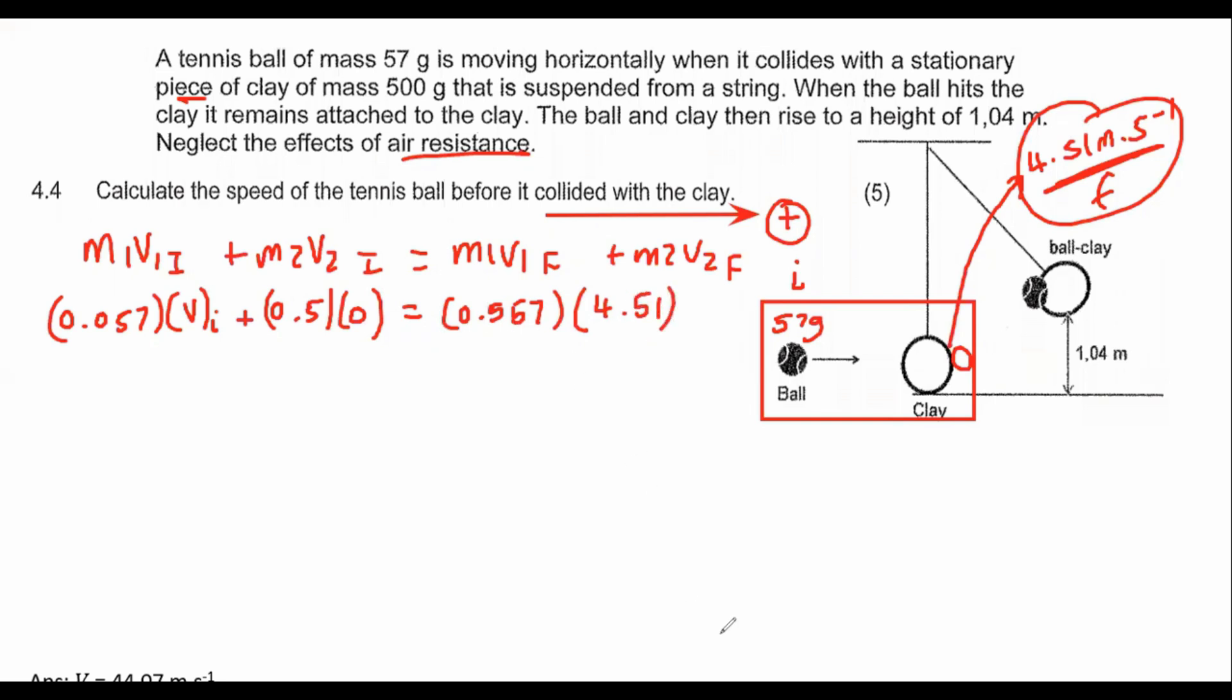Now you can do your calculation. What we find is that the original velocity of the tennis ball is 44.07 meters per second.